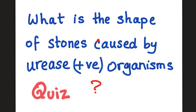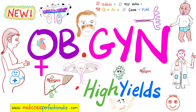Quiz time. What is the shape of stones caused by organisms that are urease positive? Please let me know the answer in the comment section and try to enumerate 5 organisms that are urease positive. You will find the correct answer in the next video in this lab's playlist. If I have bacteria in the urine with no symptoms, it's called asymptomatic bacteriuria. In most cases it's no big deal, but during pregnancy it's a very big deal.